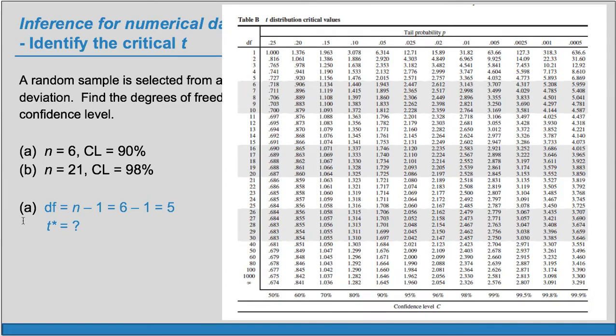And then find the column that corresponds to 90% confidence. So here's 90% here. And trace those. Trace across. Df is 5. And confidence level is 90%. And where they meet, that's our t-star. So t-star is 2.015.